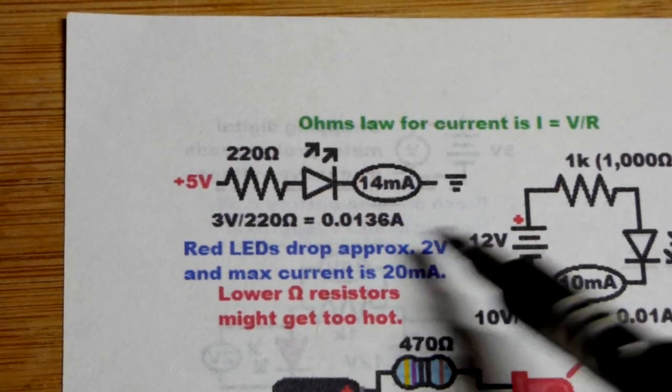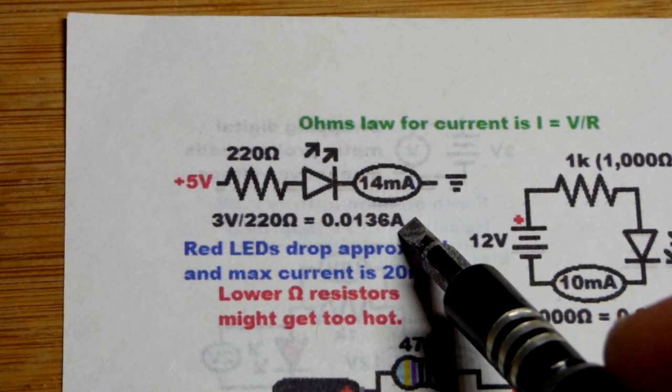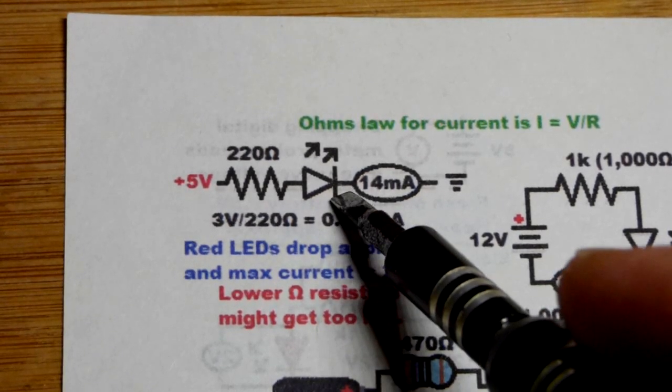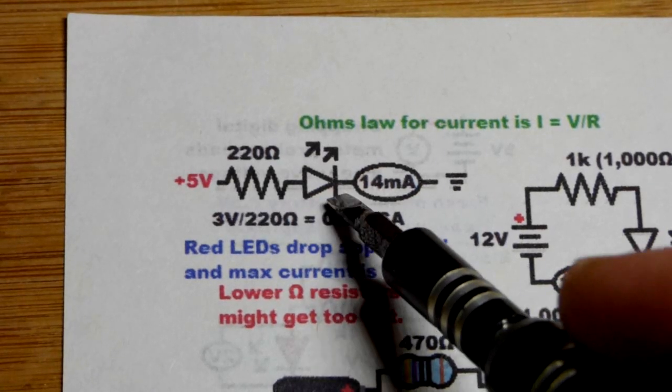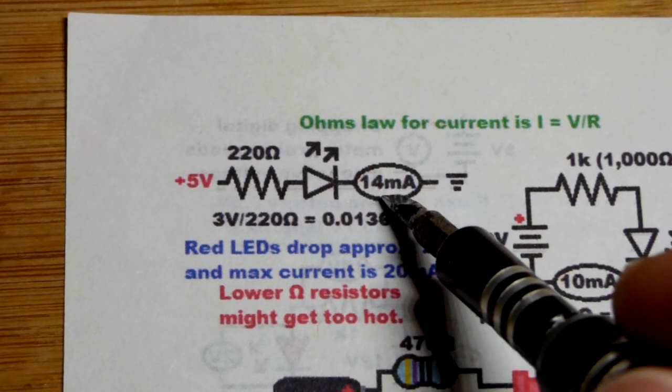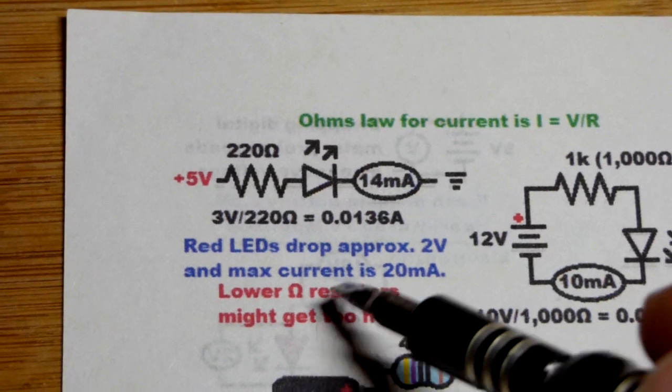And there's the math, the current. This is the same as 13.6 milliamps of current, which will light up an LED pretty nicely. You could go up to about 20 milliamps, but that's the limit. I think even 20 milliamps is a little bit hard on the LEDs. You should probably go down a little bit. 15 is probably fine, maybe even 10 milliamps of current would be fine right there.